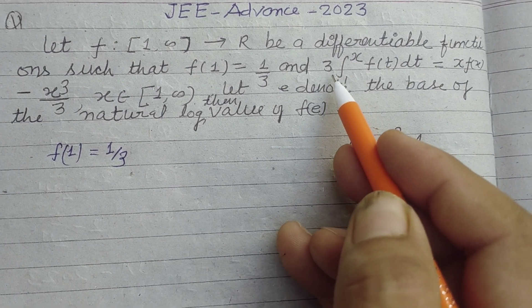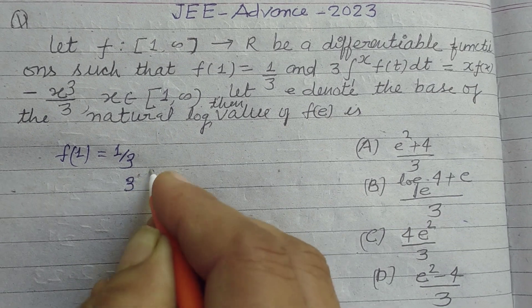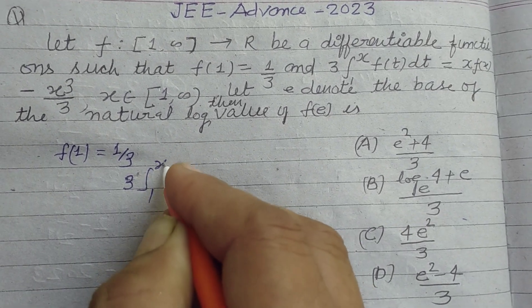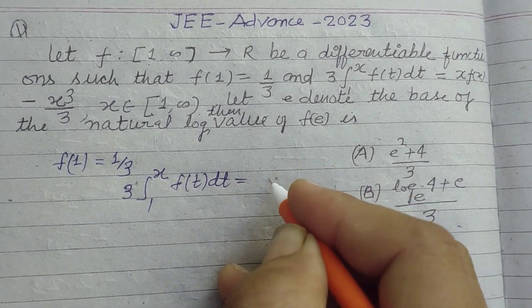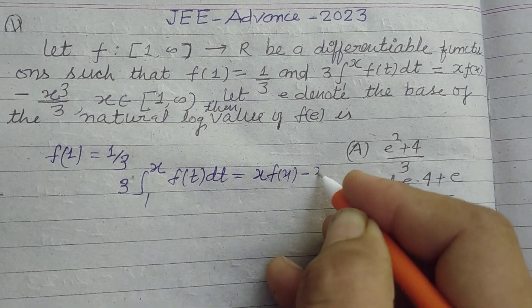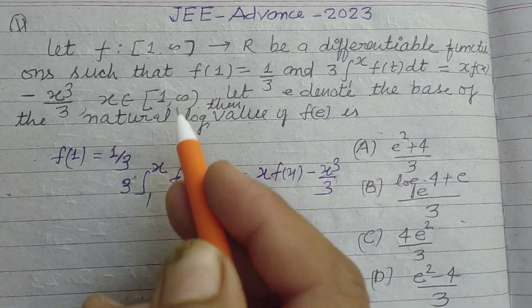And 3∫₁ˣ f(t)dt = xf(x) - x³/3, where x belongs to [1,∞). Let e denote the base of the natural logarithms, then find the value of f(e).